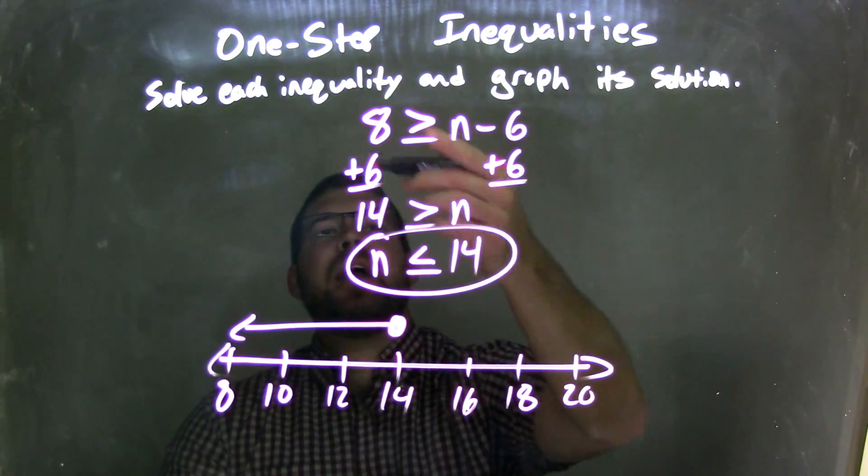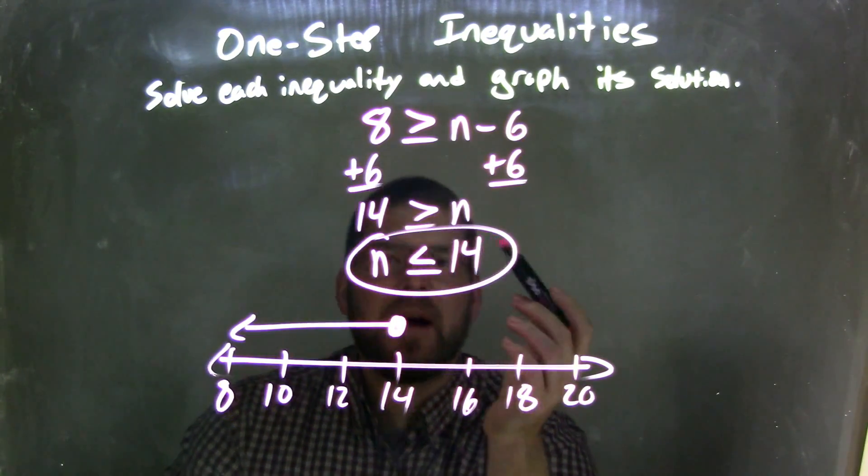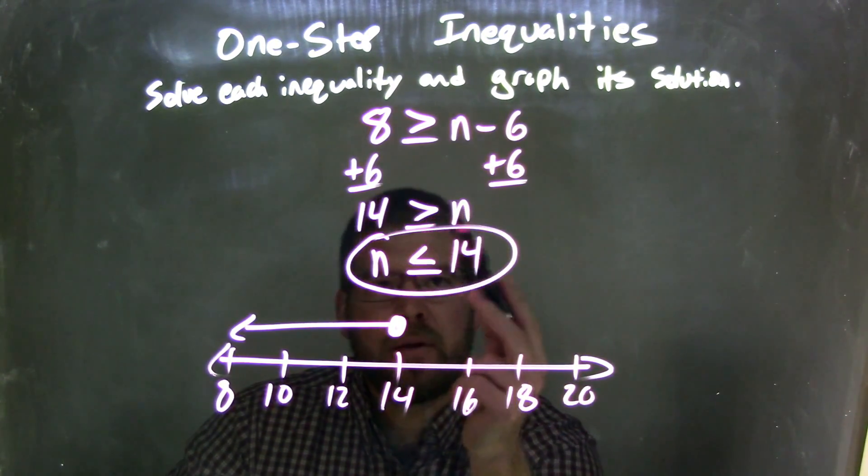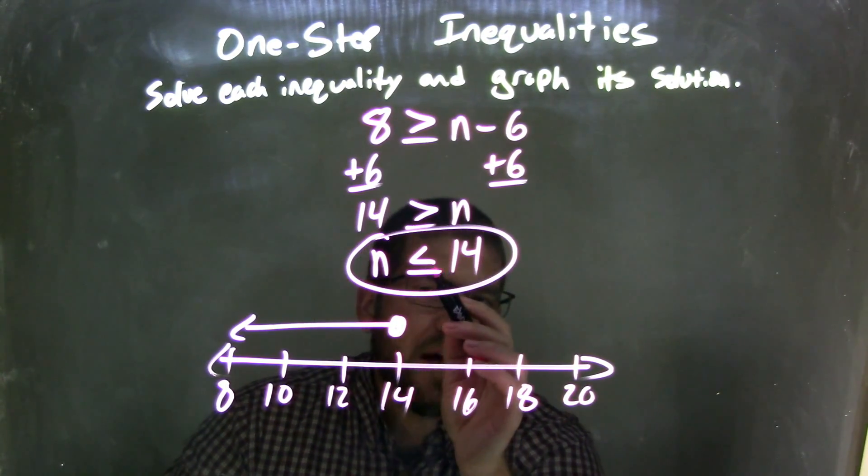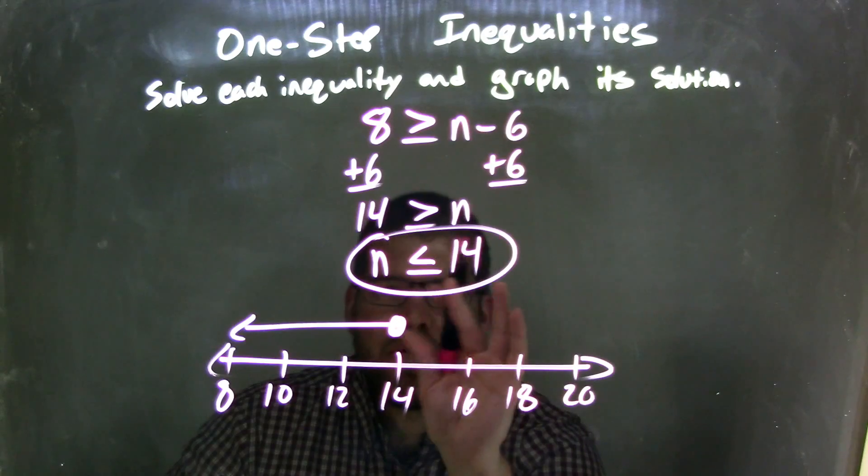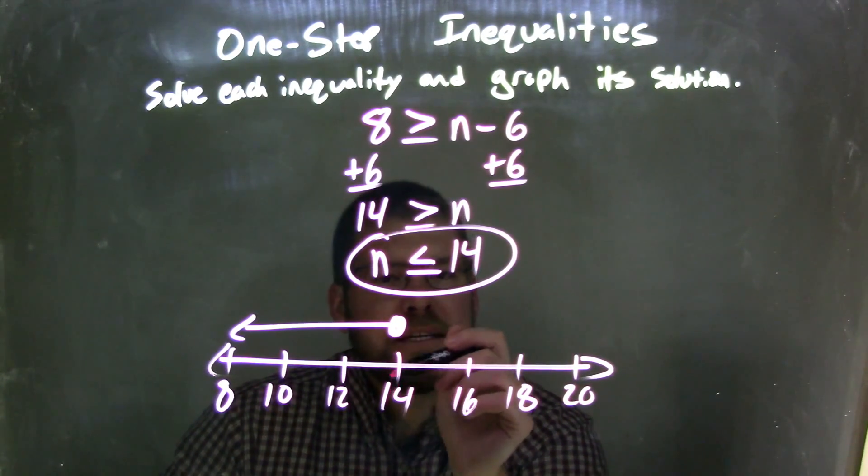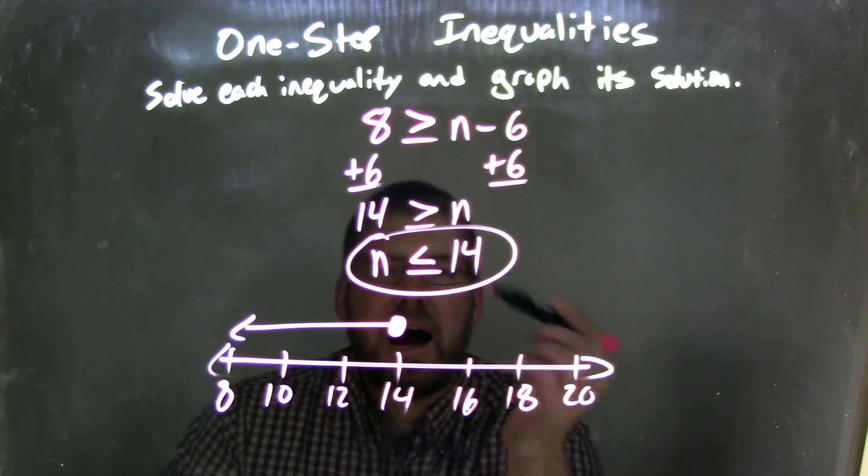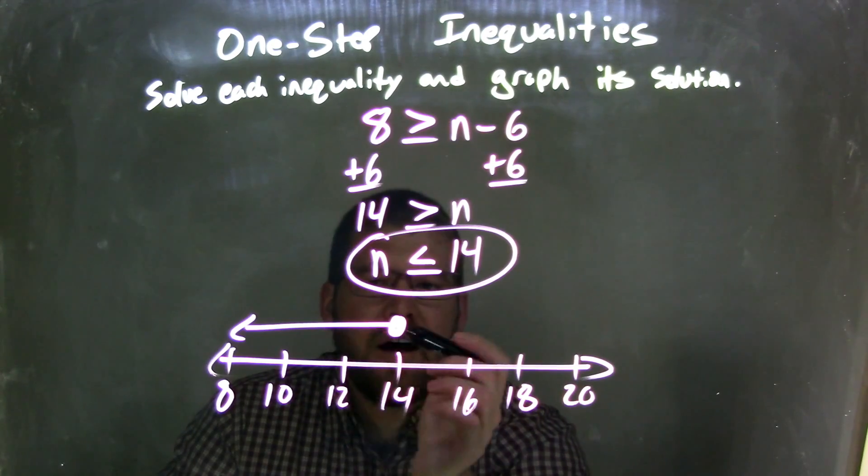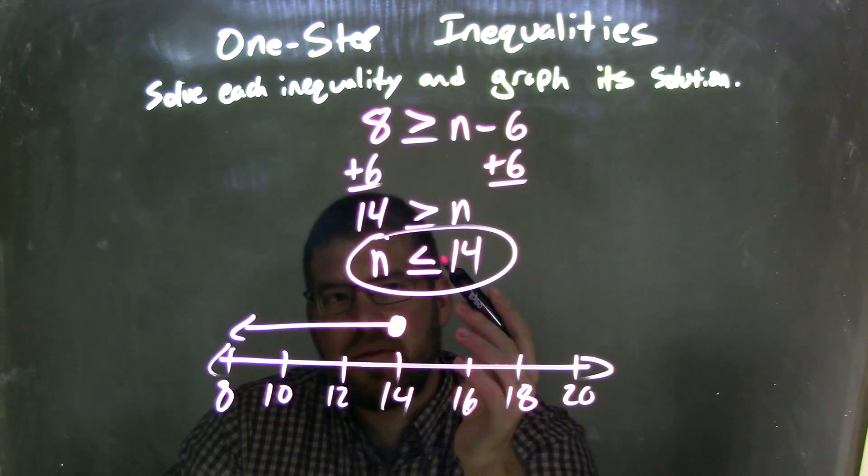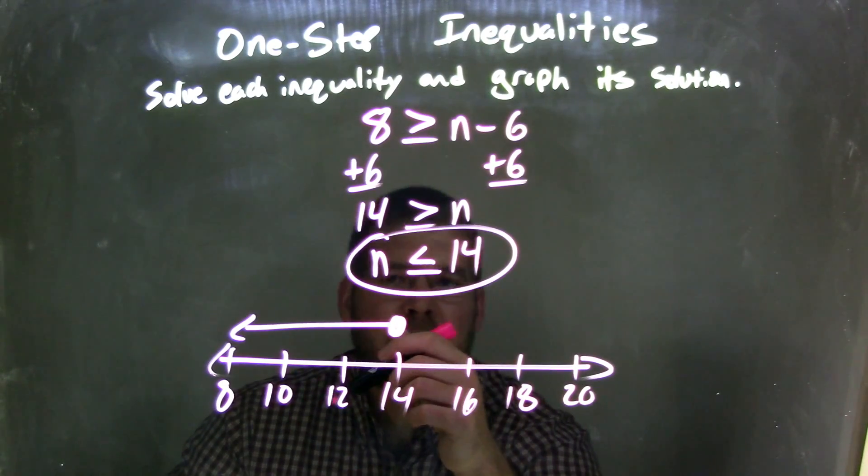So let's recap here. We have 8 is greater than or equal to n minus 6. I'm going to add a 6 to both sides. We have n by itself. So we have 14 is greater than or equal to n, which is the same thing as, if you flip it, n is less than or equal to 14. Make sure you flip the inequality as well. So then I needed to graph that. So I started at 14. I made a closed circle because of that equal to sign. I then needed to shade to the left, because it's less than. And so the arrow to the left, that's less than sign. And so this graph here matches up to my final answer, which is n is less than or equal to 14.